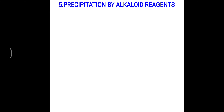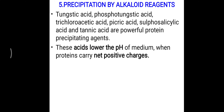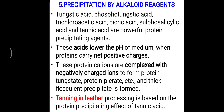One more precipitation reaction is by alkaloidal reagents. Tungstic acid, phosphotungstic acid, trichloroacetic acid, picric acid, sulfosalicylic acid, and tannic acid are powerful protein-precipitating agents. These acids lower the pH, and in acidic medium proteins carry a net positive charge — protein cations then form complexes with negatively charged anions to produce flocculent precipitates. This is also the basis of tanning in leather processing, which is based on the protein-precipitating effect of tannic acid.